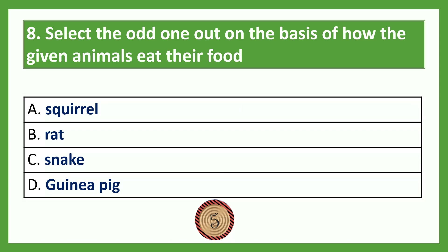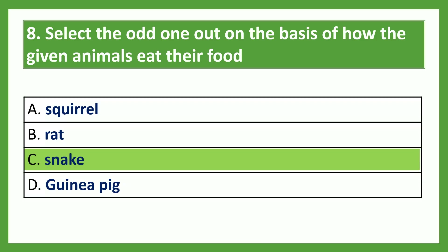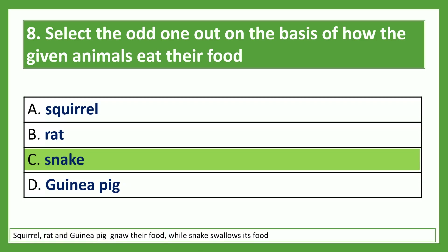Select the odd one out on the basis of how the given animals eat their food. Option A: squirrel; Option B: rat; Option C: snake; Option D: guinea pig. The answer is Option C, snake. Squirrel, rat and guinea pig gnaw their food, while the snake swallows its food.